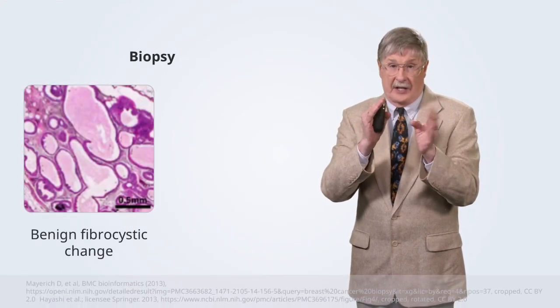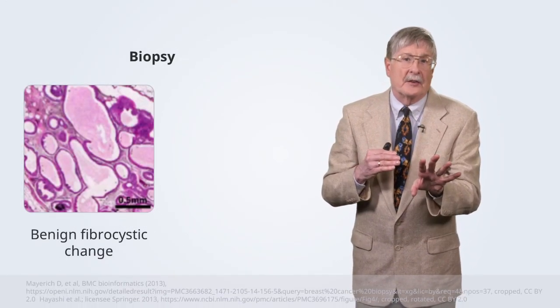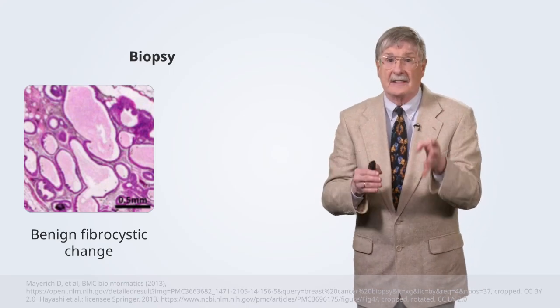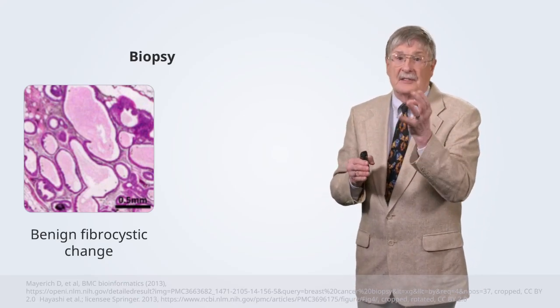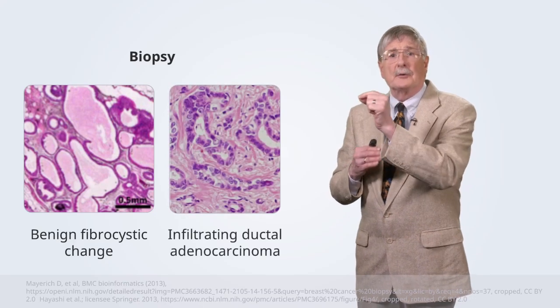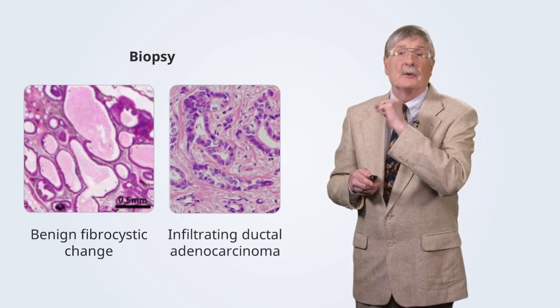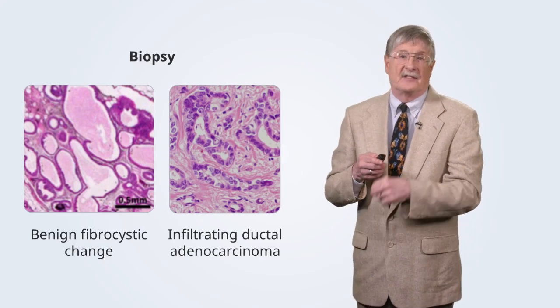What may be found on biopsy includes benign fibrocystic change — covered in more detail in the breast pathology section — or infiltrating ductal carcinoma, which is discussed separately in the breast cancer talks. With that, you've got the fundamentals of mammography: how to evaluate it and how to explain to your patients what's going on.